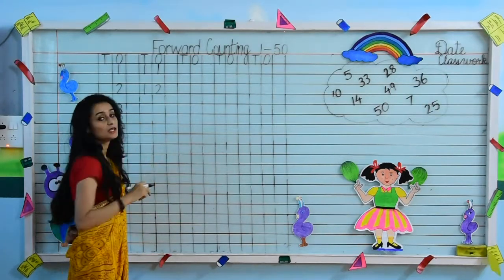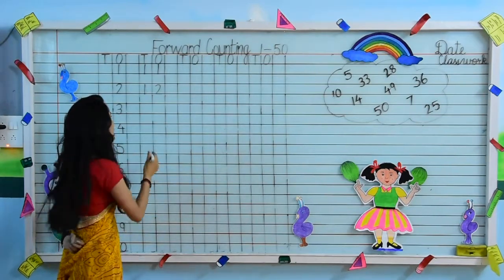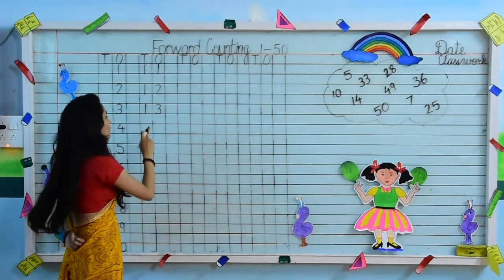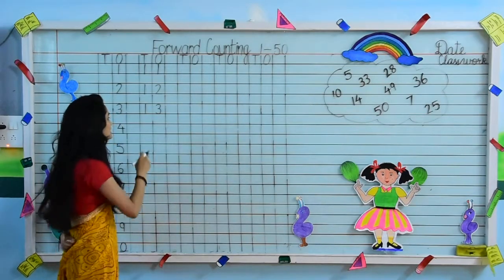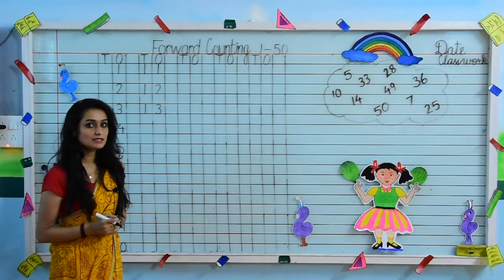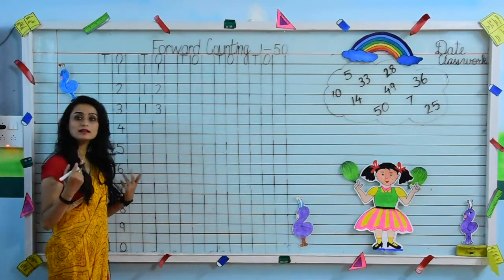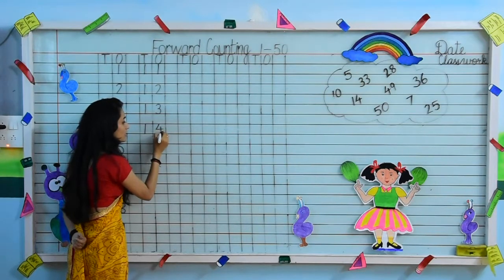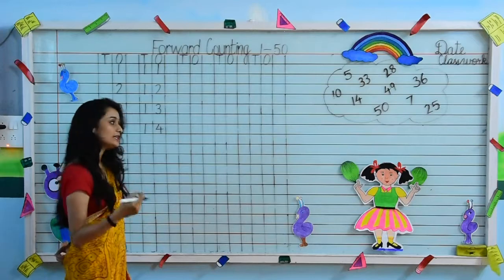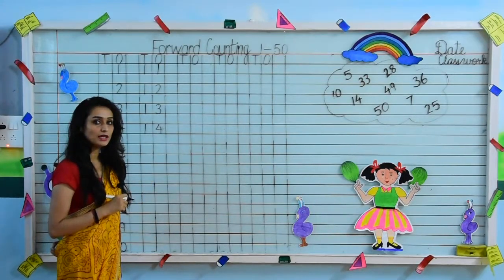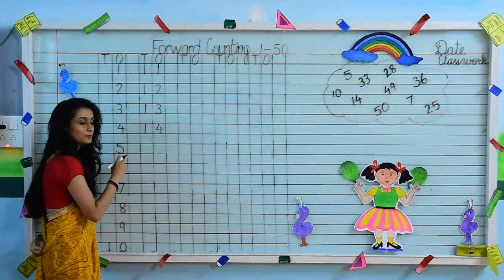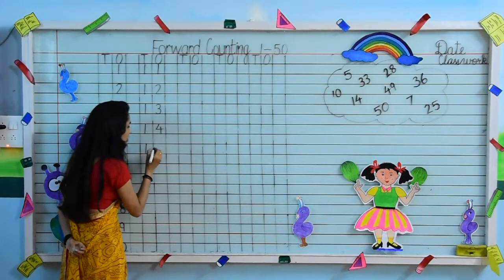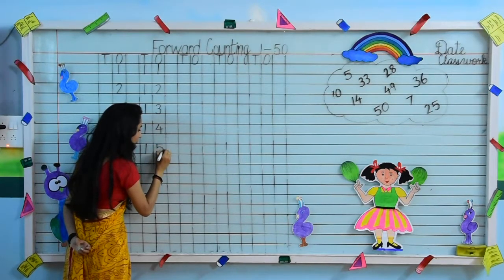What comes after 12? The next number is 1, 3 — 13. Now tell me what comes after 13. Yes, after 3, 4 is the next digit. So we will write 1, 4 — 14. Which is the next number? After 4, 5 will come. So we will write 1 and 5 together, which makes 15.